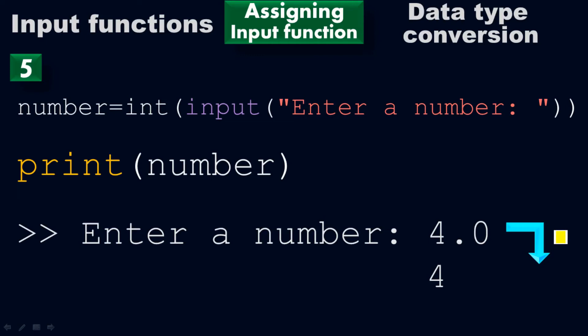When you press enter, it will be converted into integer. 4 is an integer, 4.0 is the float number. The float number has been converted into integer by using the int function.